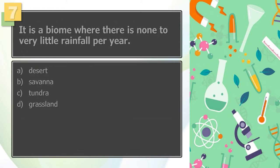Question number 7: It is a biome where there is none to very little rainfall for the year. A. Desert, B. Savannah, C. Tundra, D. Grassland.